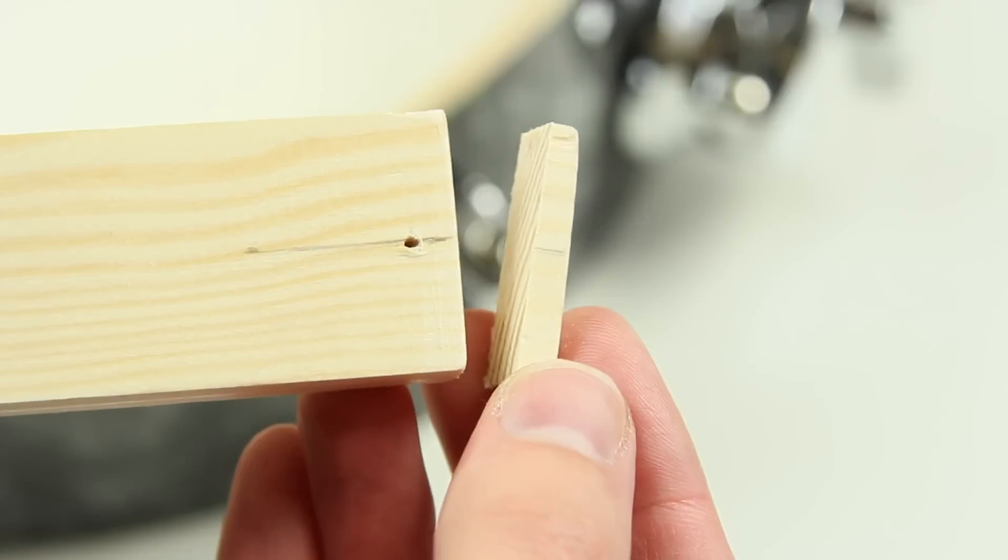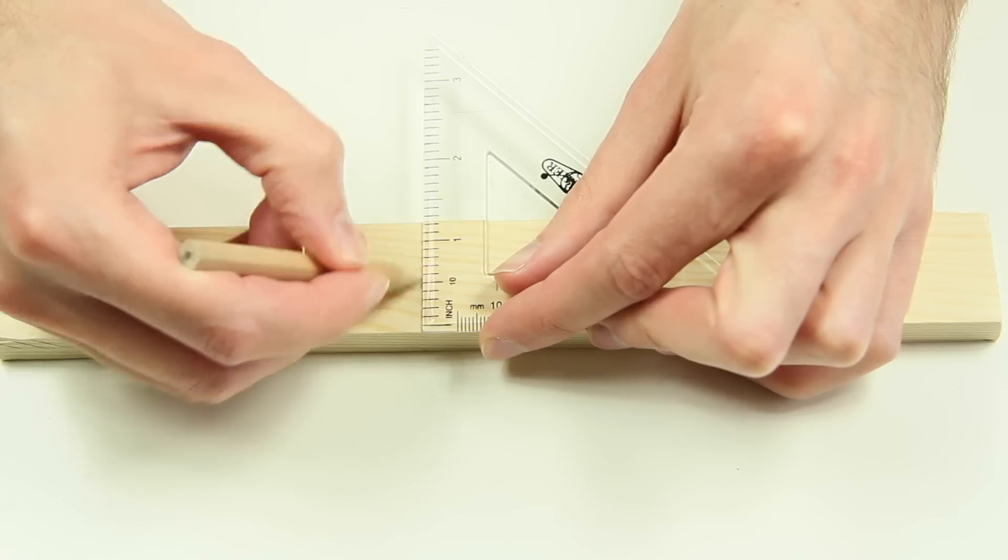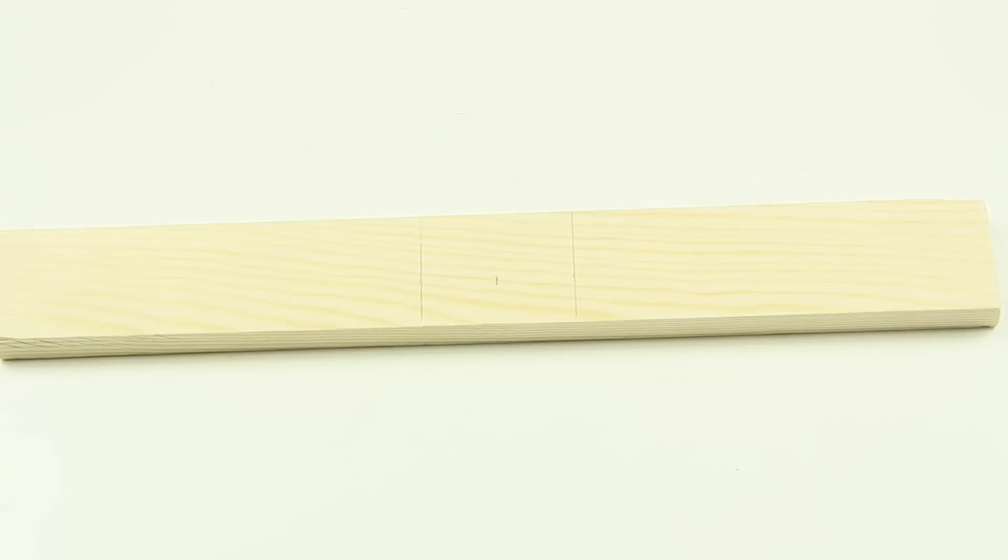As angles and lock screws take too much space, we need to shorten the wood bar again. The cone has to be exactly in the middle within these two lines.